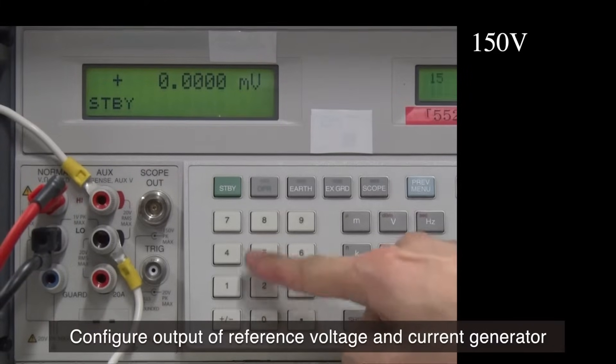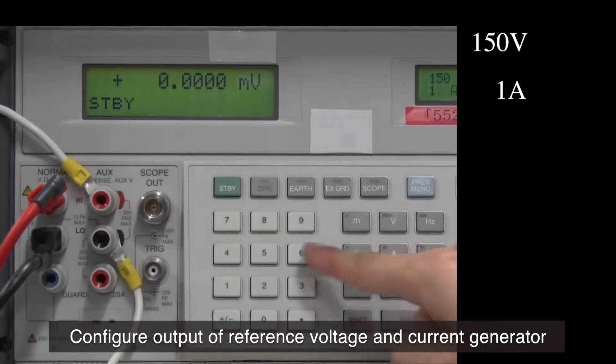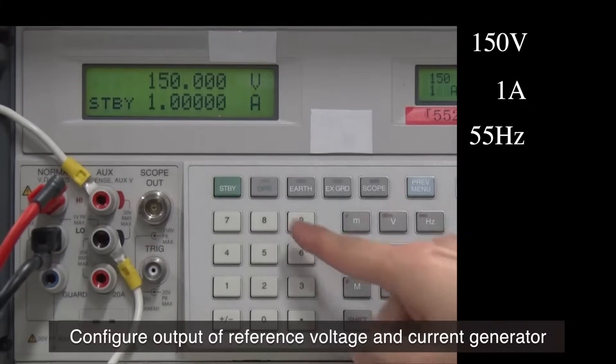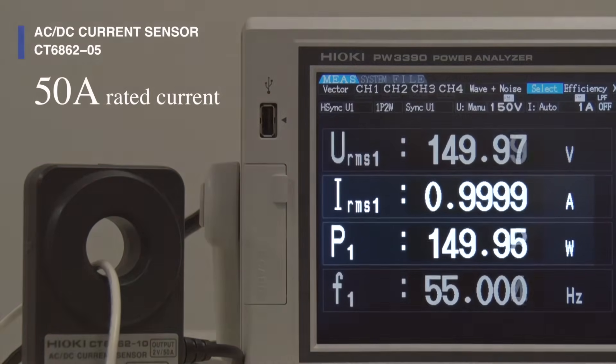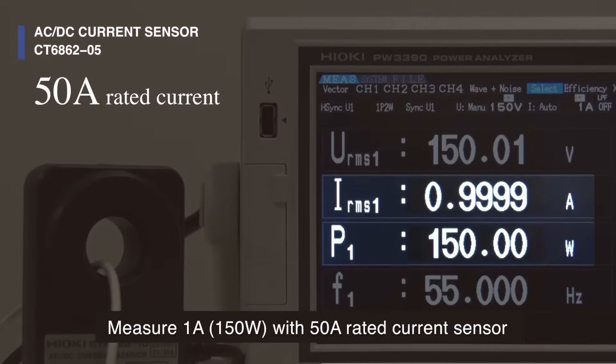Let's see the PW3390 at work by testing it with a reference voltage and current generator. First, measure one amp at 150 watts using a Hioki current sensor rated 50 amps.